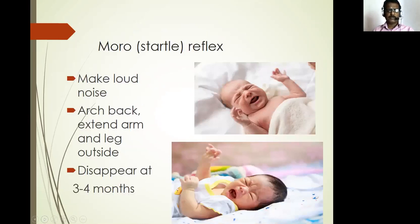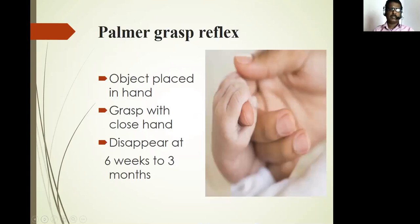Moro startle reflex: place a baby in a grip and make a loud noise — the response is arching of the back and extending the arms and legs outward. It disappears at three to four months. Palmar reflex: when an object is placed in the newborn's hand, it grabs with a closed hand. It disappears at six weeks to three months.